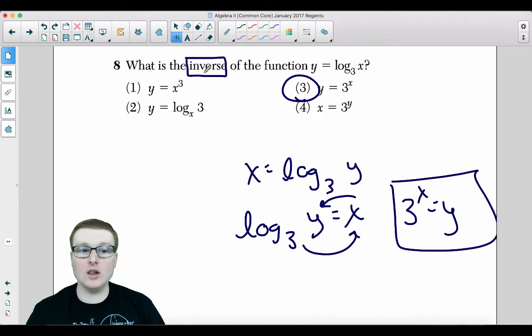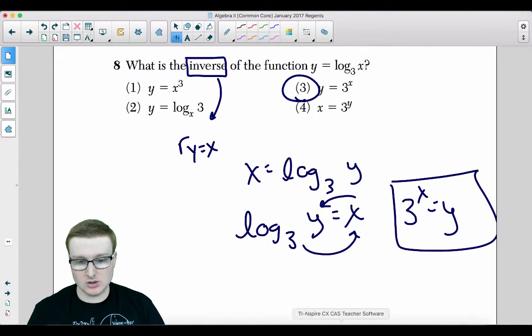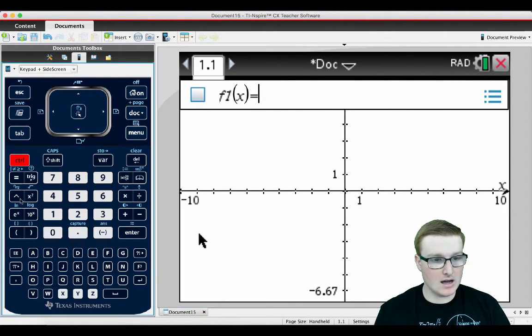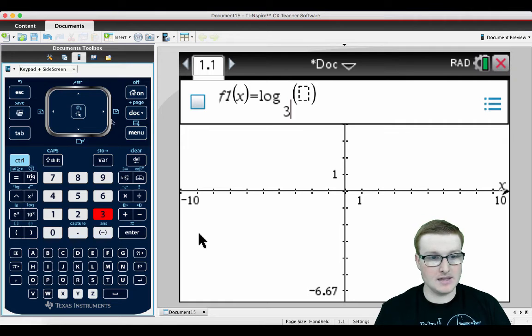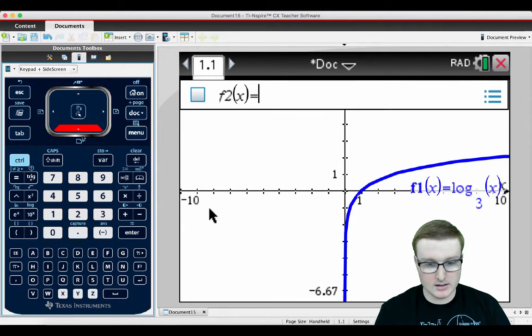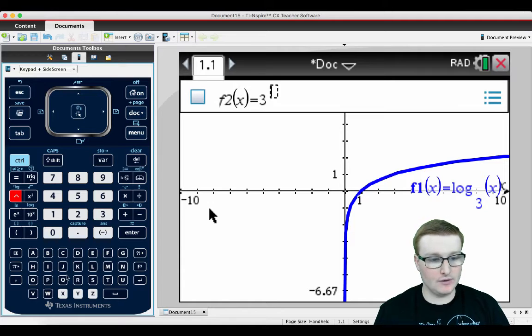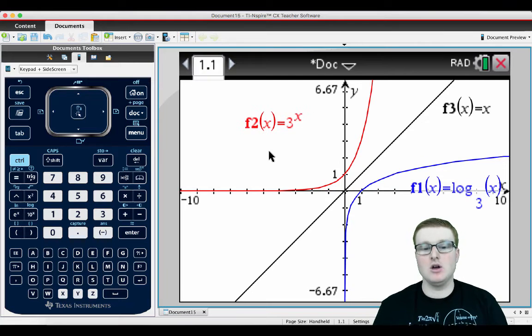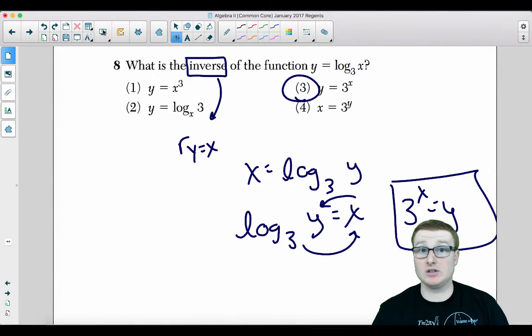Now, if you want to double check, all inverses are reflected over the line y equals x. So go to your graphing calculator and go ahead and graph log base three of x and graph three raised to the x. See if it's reflective over the line y equals x. And as you can see, it is reflective over that line y equals x. They're both equidistant from each other. So your answer is choice three.